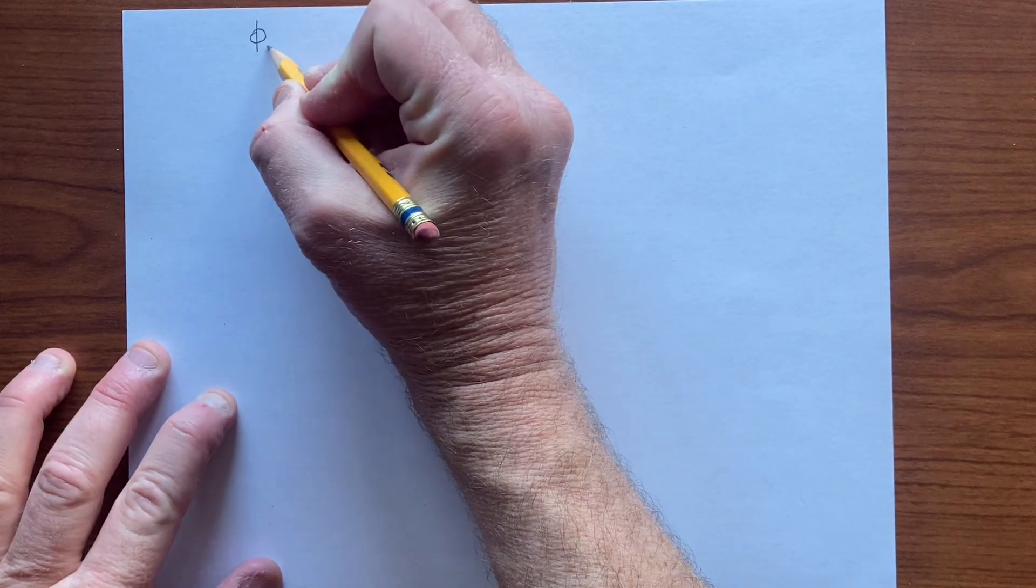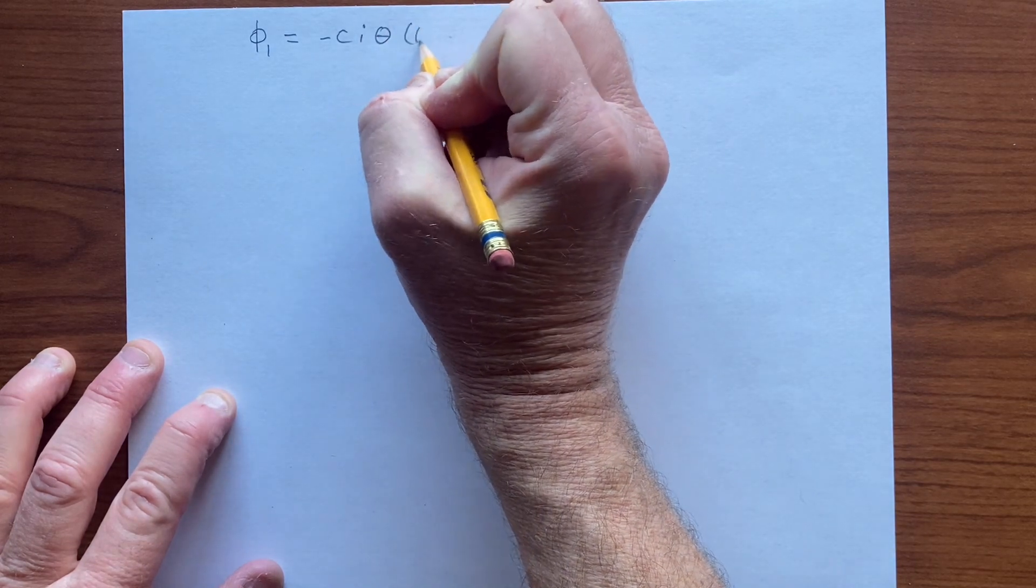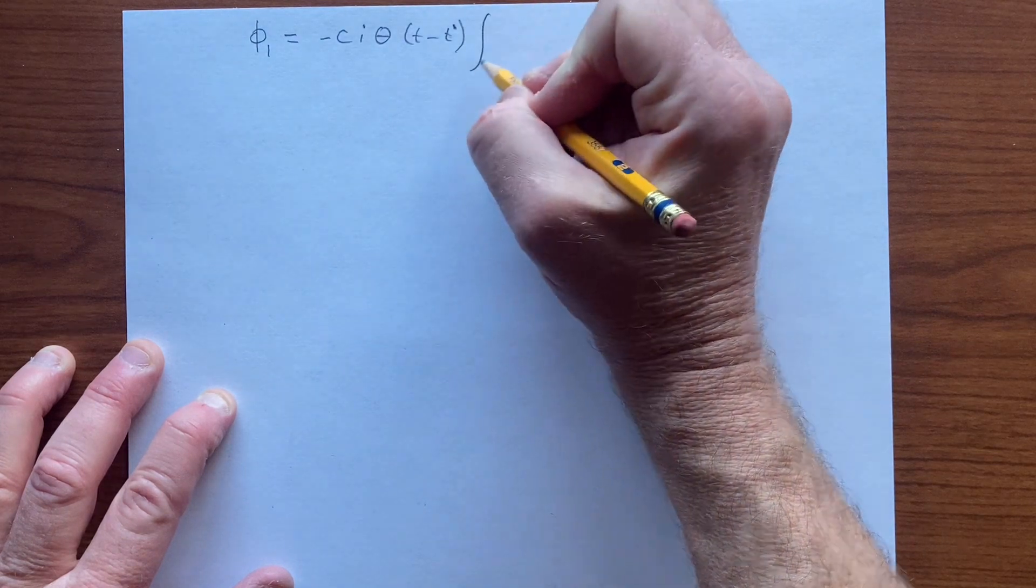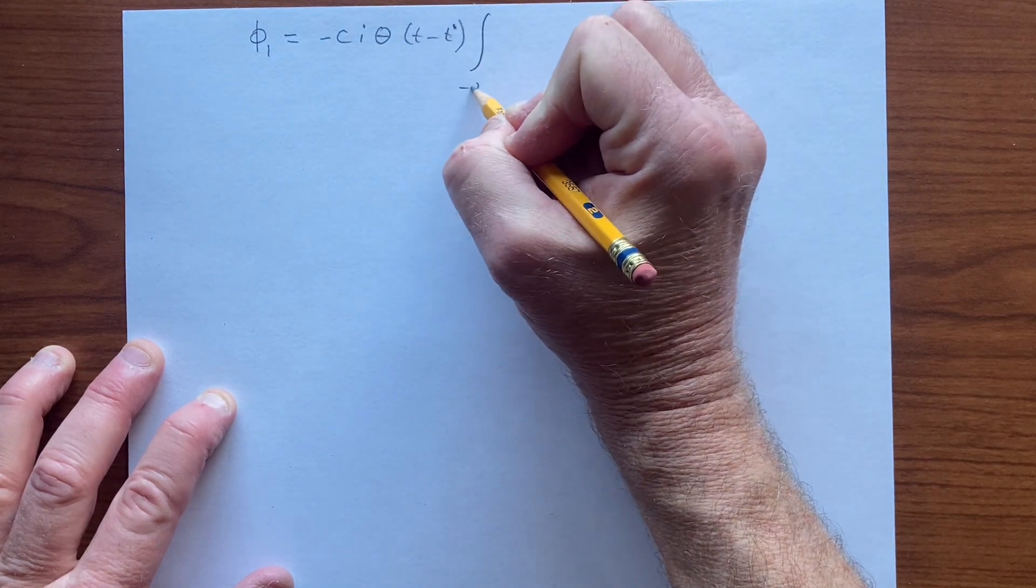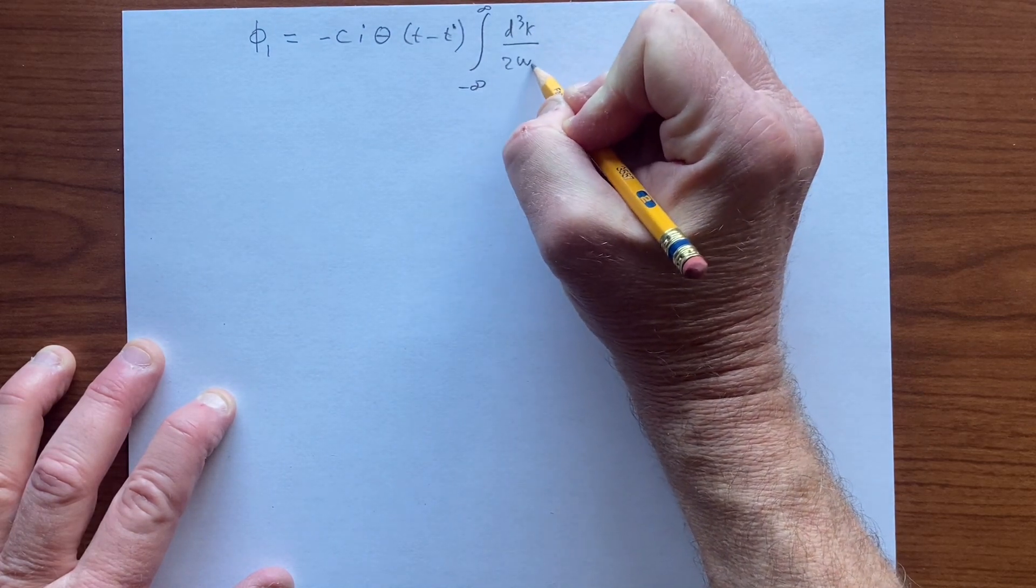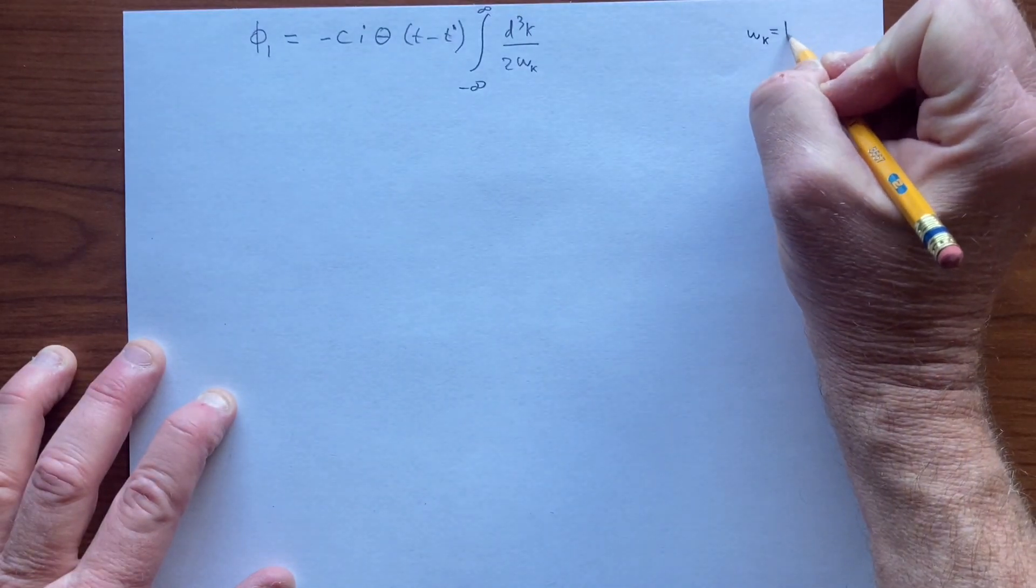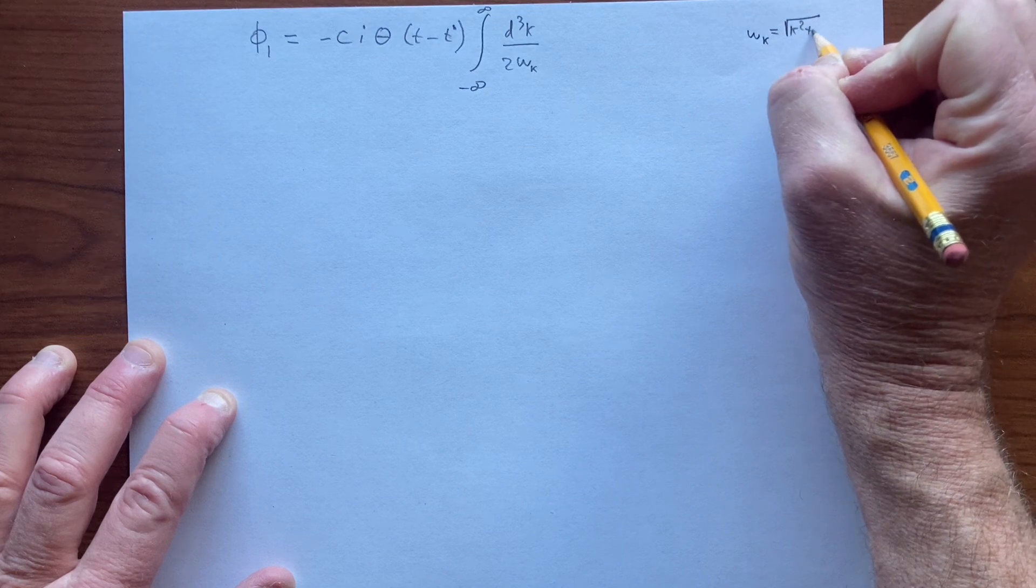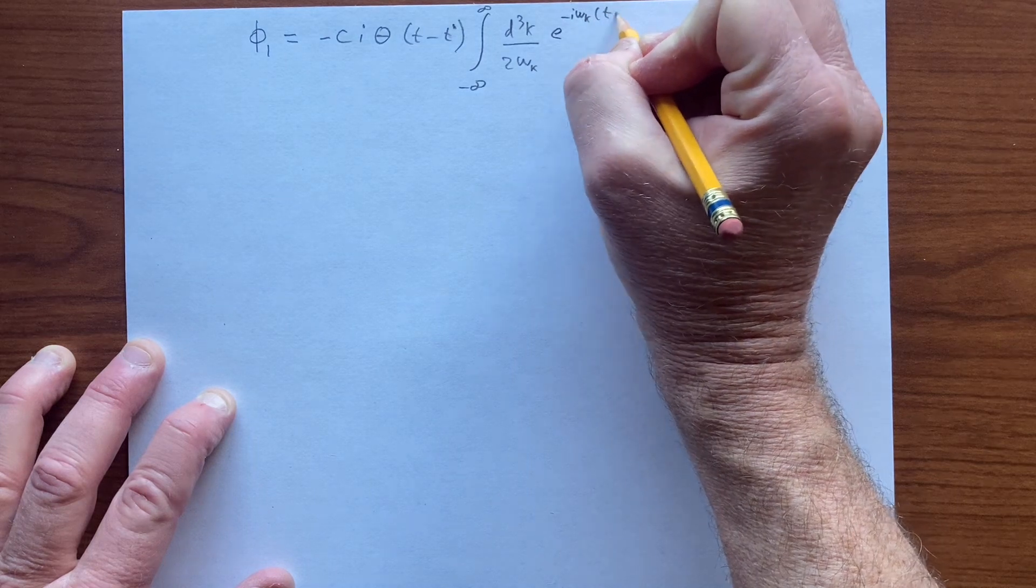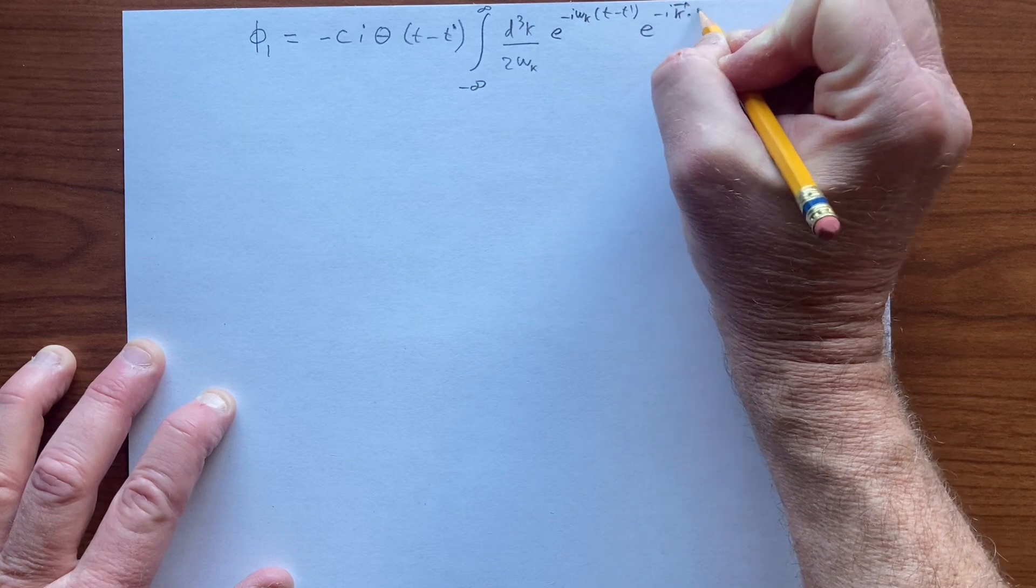So we have found that phi1 looks like this step function, where in one case when half of the solution looks like this with t minus t prime. And let's just write this as it's often written, omega k, e to the minus i omega k, t minus t prime, e to the minus i k r.